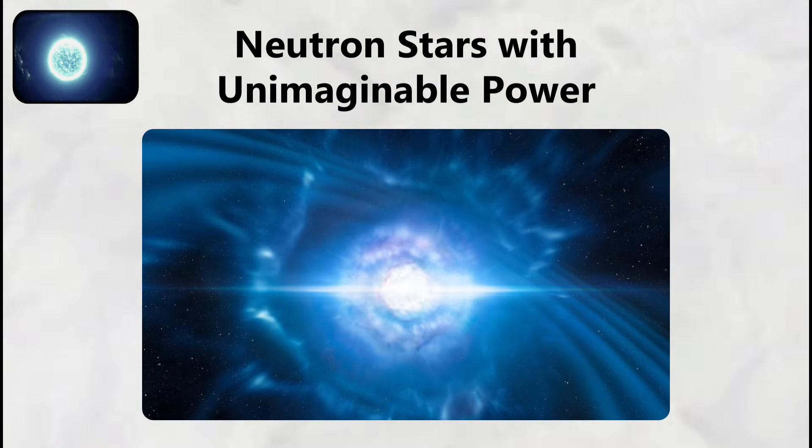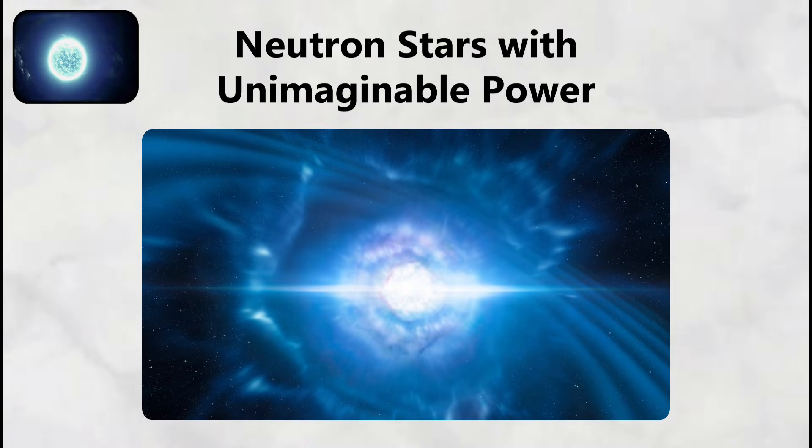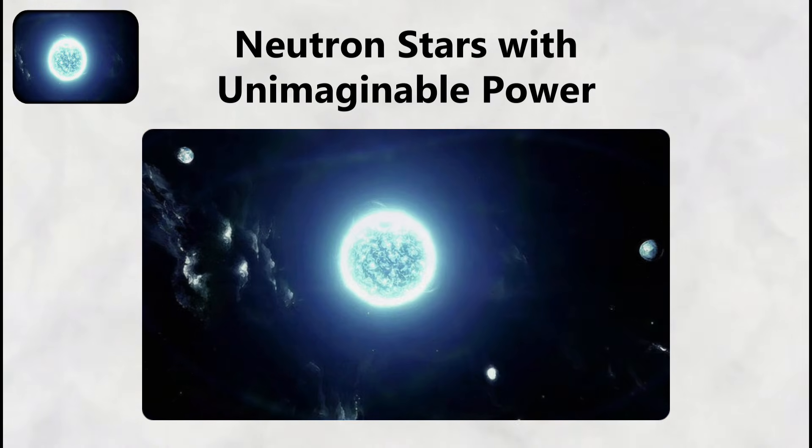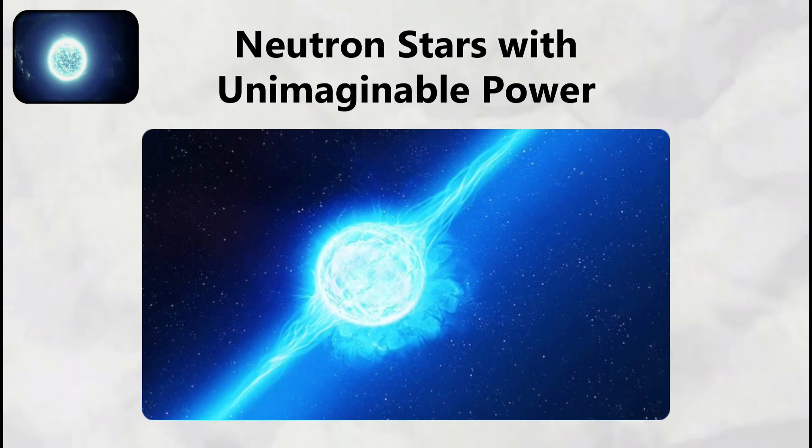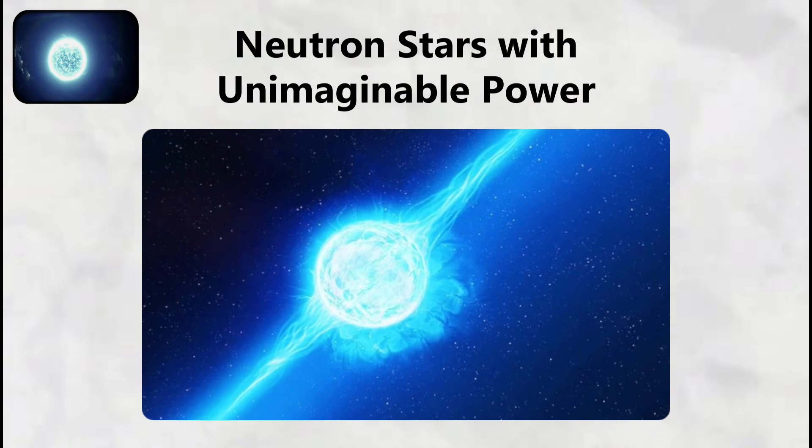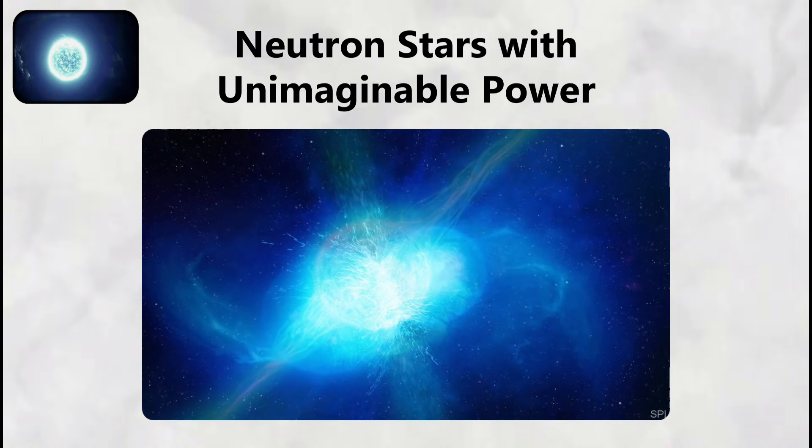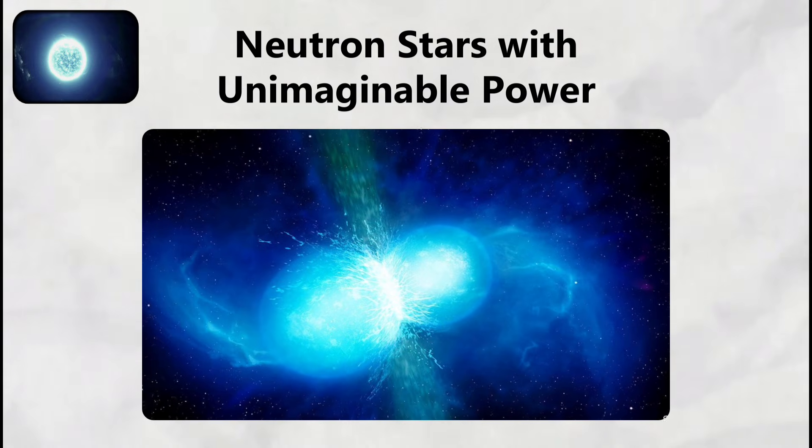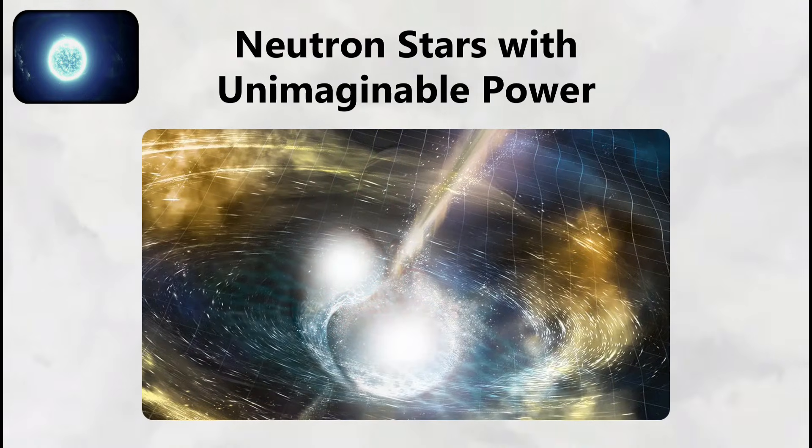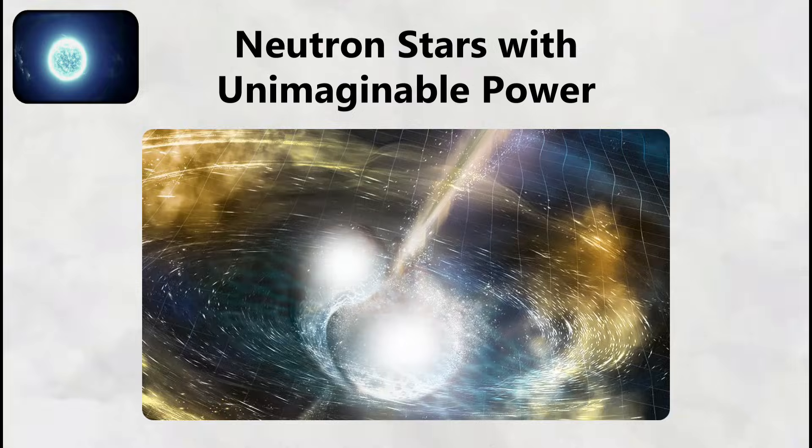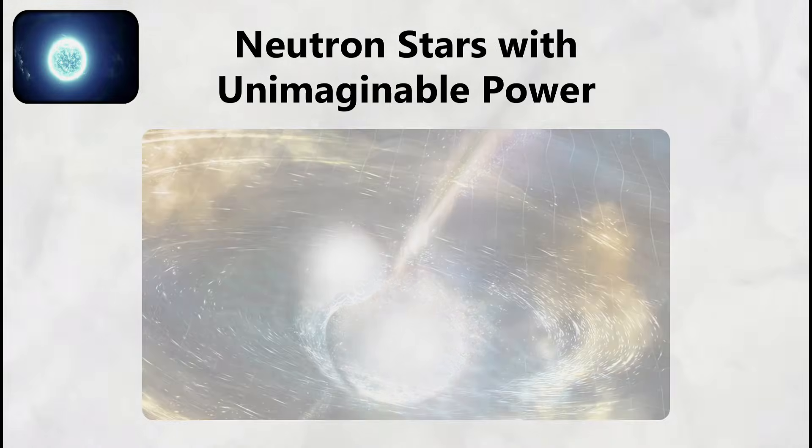Magnetars rotate between once every two seconds to once every 12 seconds, much slower than typical pulsars, because their powerful magnetic fields act as cosmic brakes that gradually slow their spin over thousands of years. The surface temperature of an active magnetar can reach 10 million degrees Celsius, making it hot enough to emit X-rays and gamma rays that can sterilize planets within several light years of the source.